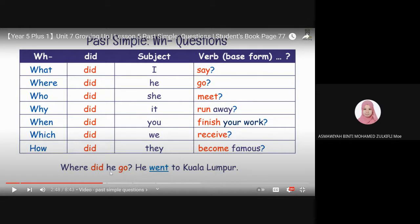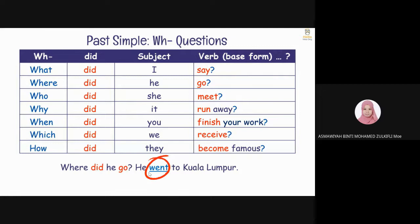The verb here, kalau dalam soalan, kalau selepas did, kena dalam root form. Root word. Kata asal. Alright. To change the base form of the verb go to the past simple form, went.